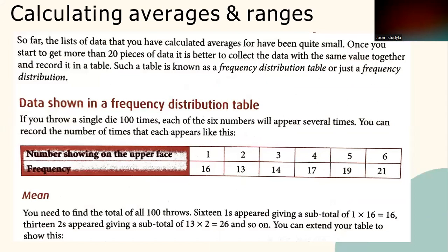Calculating averages and range. So far, the lists of data you have calculated averages for have been quite small. Once you start to get more than 20 pieces of data, it is better to collect the data with the same value together and record it in a table. Such a table is known as a frequency distribution table, or just a frequency distribution. For example, if you throw a single dice 100 times, each of the six numbers would appear several times, and you can record the number of times each appears.